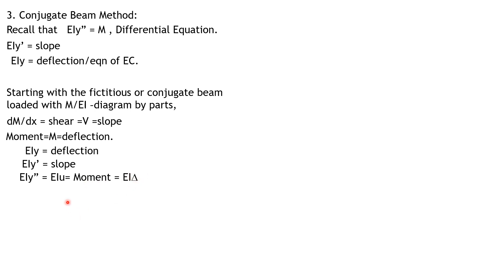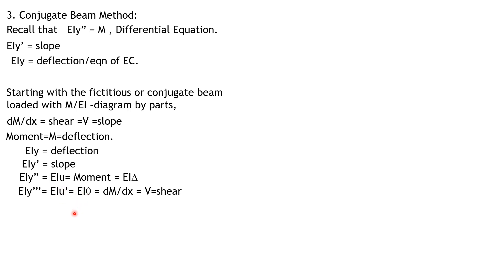Differentiating, EIy prime is the derivative of moment, and since the derivative of moment equals shear, and u prime is interpreted as the slope, EI u prime or EI theta — the derivative of moment with respect to x — corresponds to shear. Therefore, the slope on the real beam corresponds to the shear of the conjugate beam. The slope at a point on the real beam corresponds to the shear at the same point on the conjugate beam.